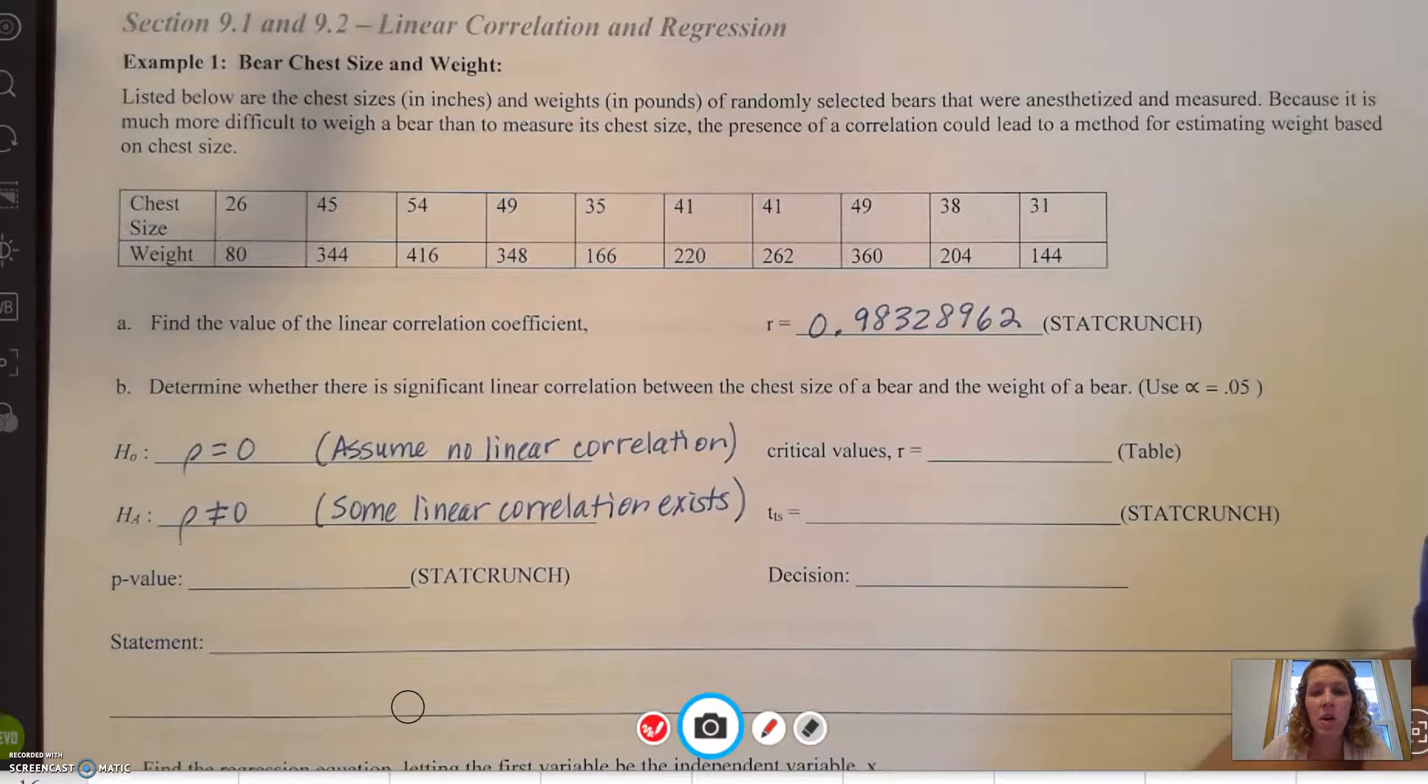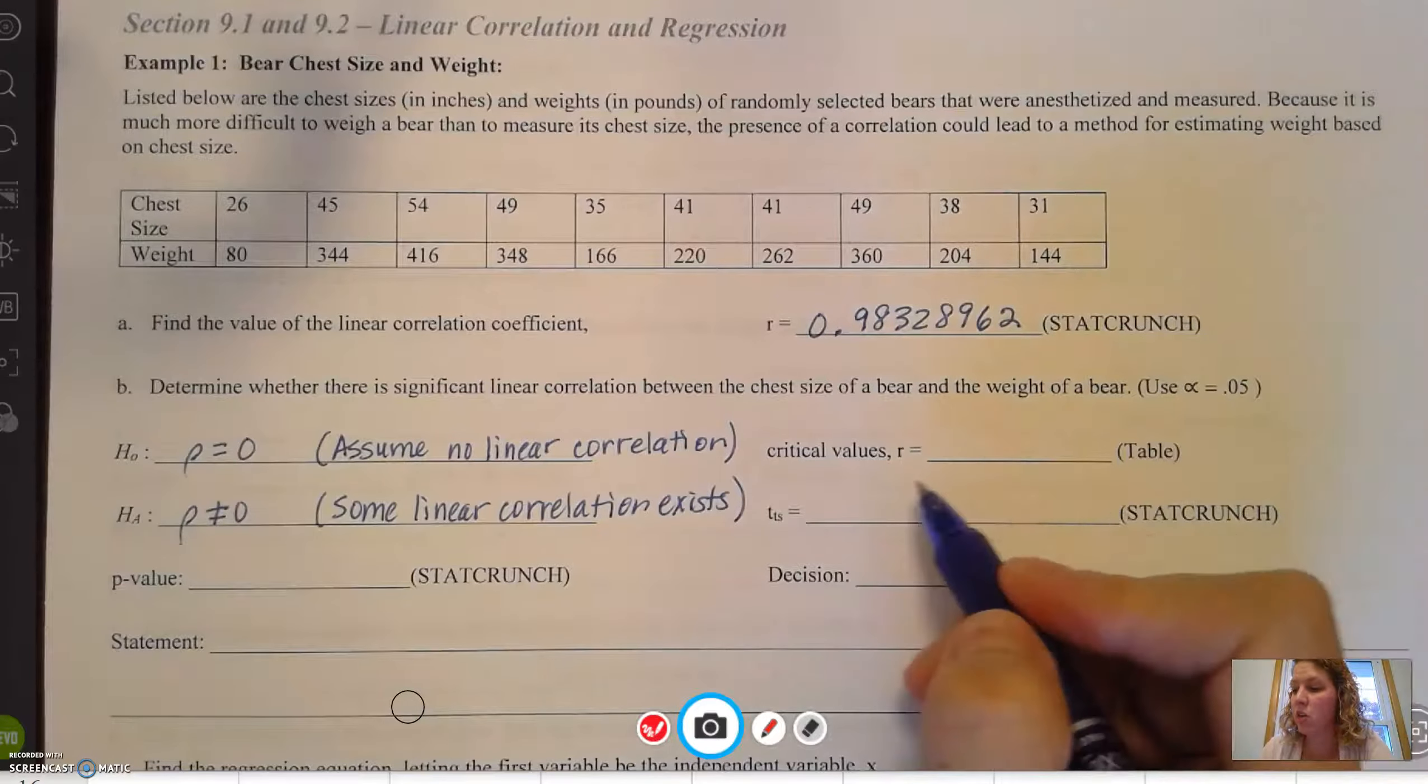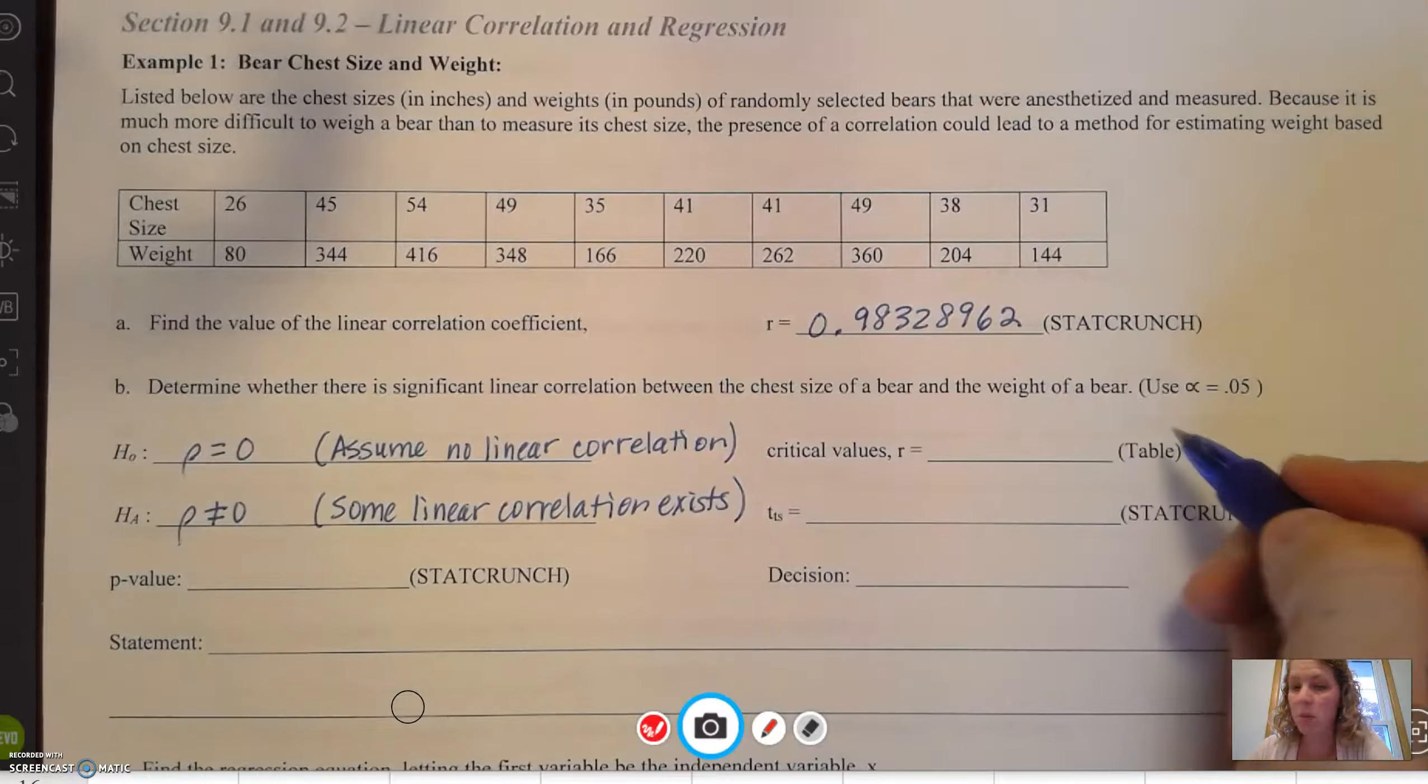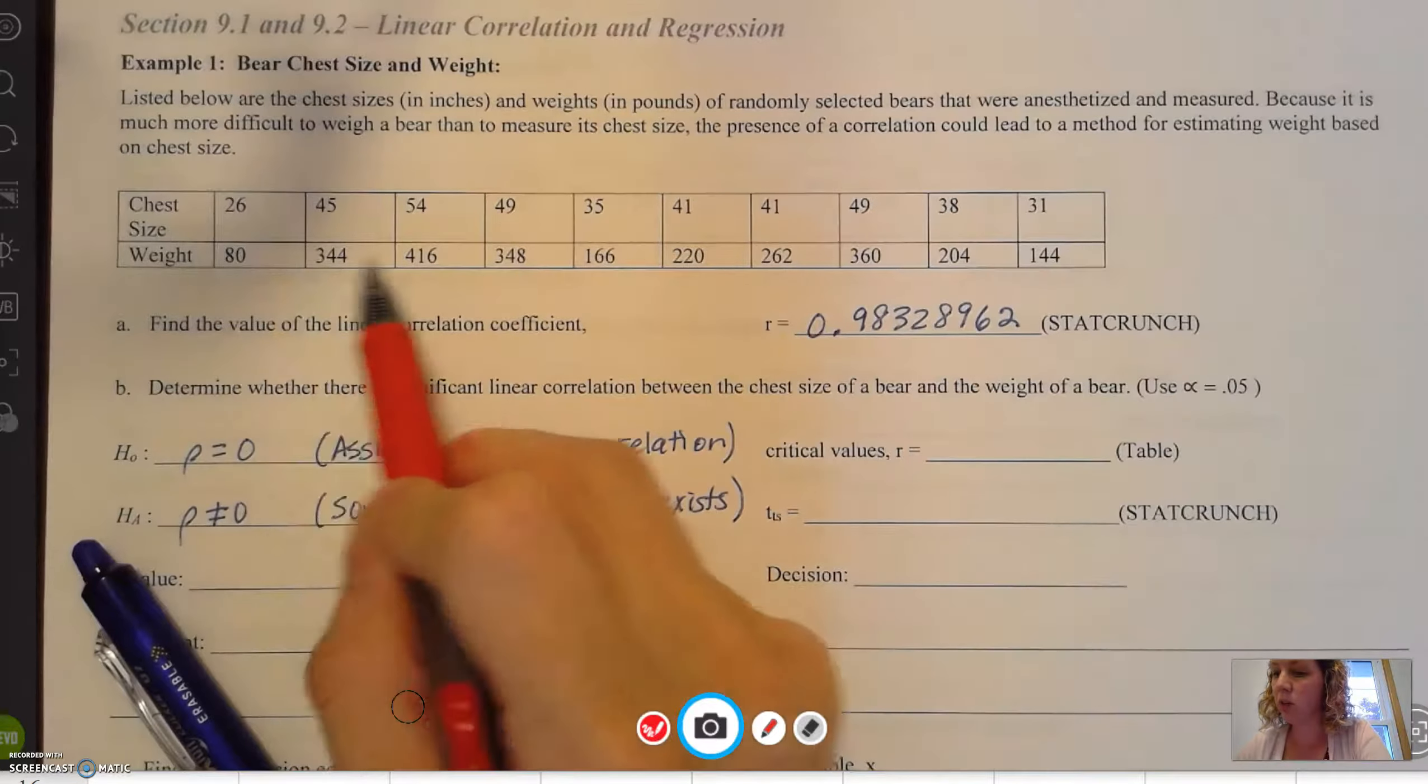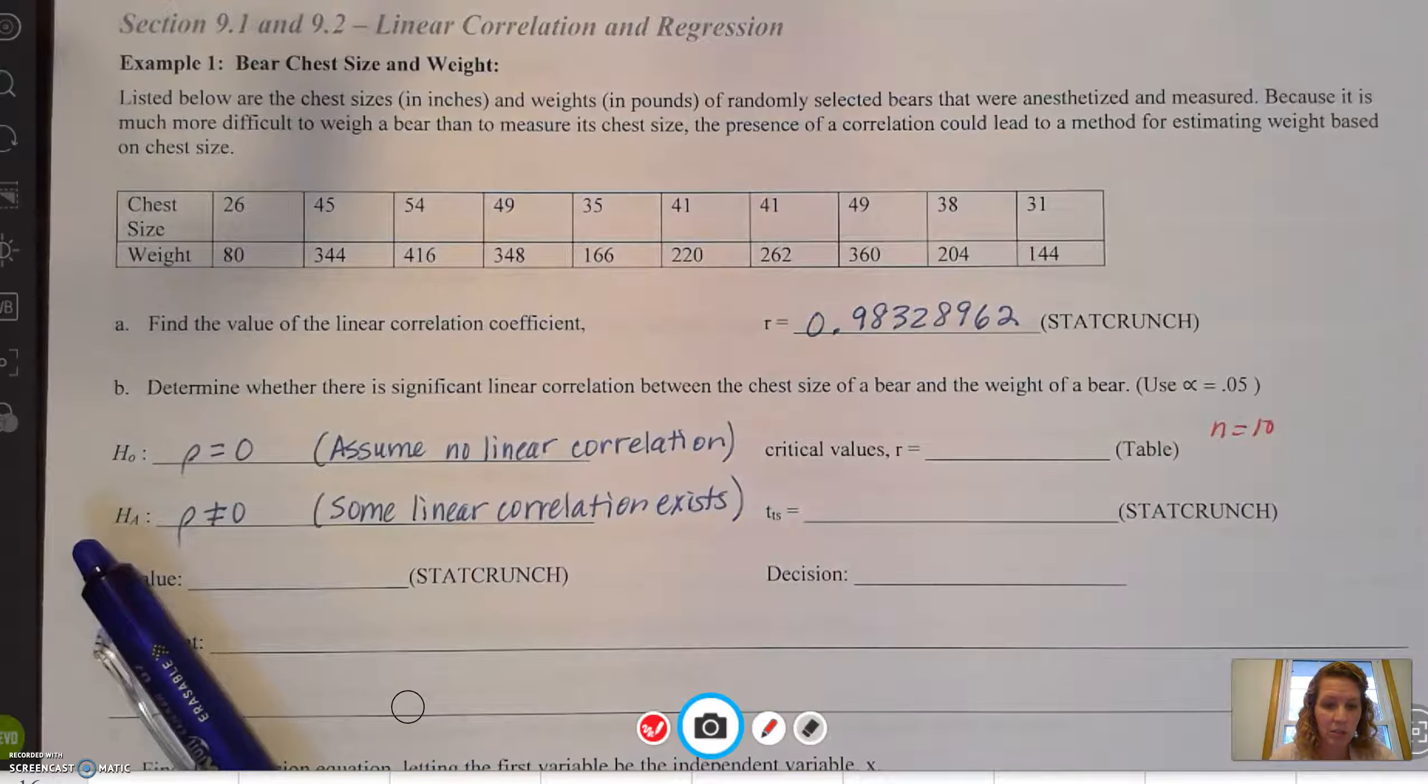Now, we're going to do both the traditional method and the p-value method. In the traditional method, we're going to find the critical value r and look that up on the table. The two things we need to know are n, which is the sample size, and alpha. How many bears were there? 1, 2, 3, 4, 5, 6, 7, 8, 9, 10 bears. So n is 10, and we said alpha was 0.05. Let's look this up on our chart.